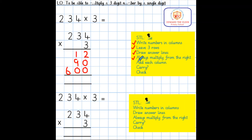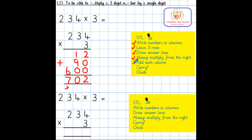My next step is to add each column, starting at the right in the ones. 2 add 0 add 0 equals 2. 1 ten add 9 tens equals 10 tens, so I put a 0 in the tens and carry the 100 across. In the hundreds column I have 600 and the 100 makes it 700. Have I added each column? Yes, I have.